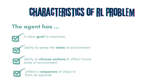Recall from the first video we discussed the four characteristics of a classic reinforcement learning problem. We will now walk through tic-tac-toe and explore how the game maps onto each of these aspects. Firstly, there is a clear goal to maximize: to be the first to get three symbols in a row and win the game.